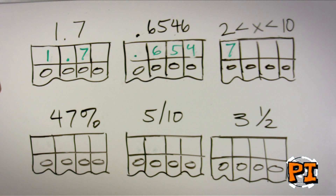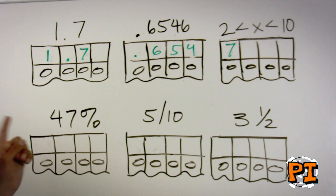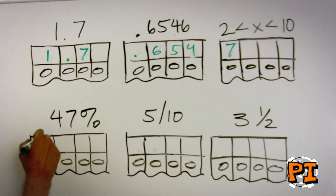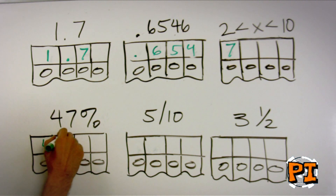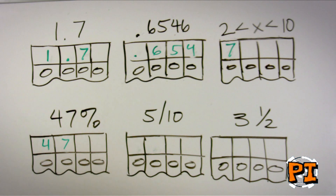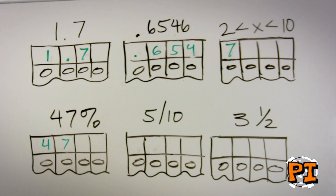Another thing to note is that if you have a percentage question which asks you specifically for a percent as an answer, and the answer in this case is 47%, you write 47. There's no percentage sign — you can't bubble it in. Do not write in .47, because that will be read as .47%.